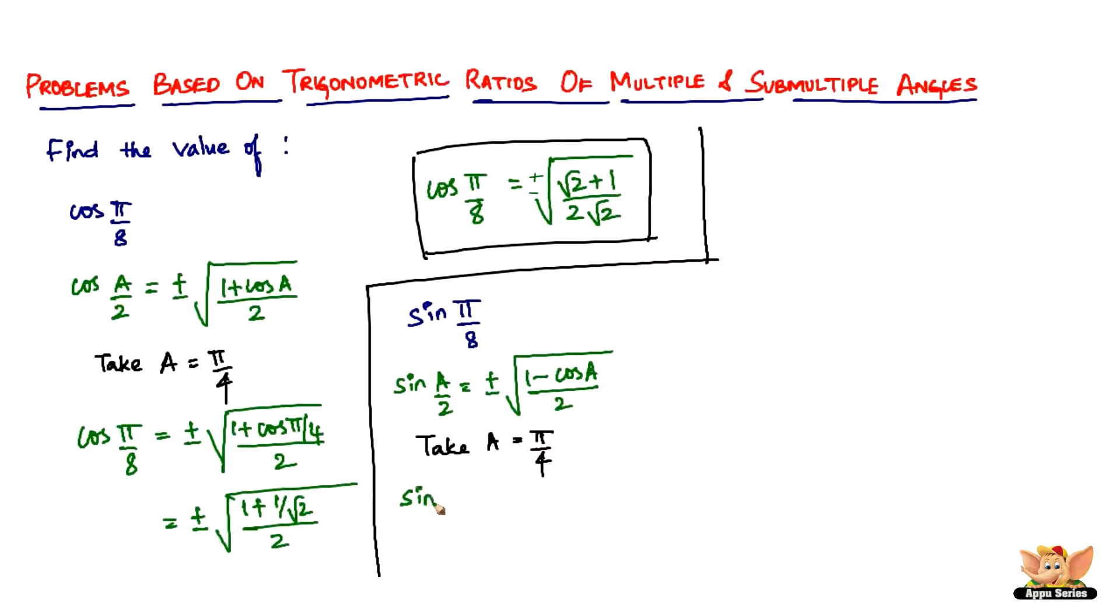When we do that, we get sin π/8, and it automatically changes the right-hand side as well. We're going to get (1 - cos π/4)/2. It's the same values.